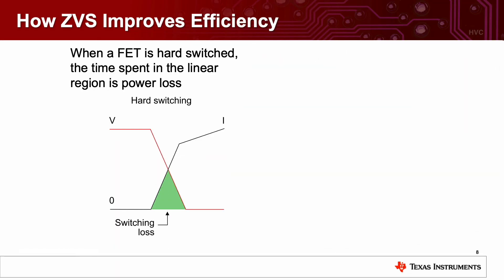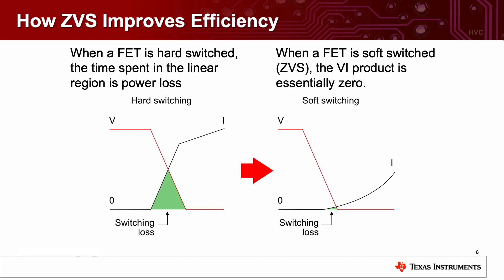So how does ZVS improve efficiency? When a FET is hard switched, the time spent in the linear region is power loss. So when you're hard switching, you can see the cross between the voltage falling and the current rising has some switching loss in the area shaded in green. When a FET is soft switched or zero voltage switched, the VI product is essentially zero. So this is why it's called soft switching, because there's minimal switching losses.